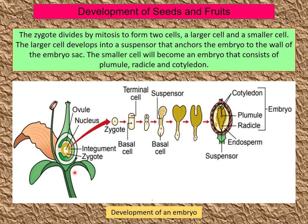The zygote divides by mitosis to form two cells — a larger cell and a smaller cell. The smaller cell is the terminal cell, and the larger cell is the basal cell. The larger cell develops into a suspensor that anchors the embryo to the wall of the embryo sac. The smaller cell will become an embryo consisting of plumules, radicles and cotyledons.